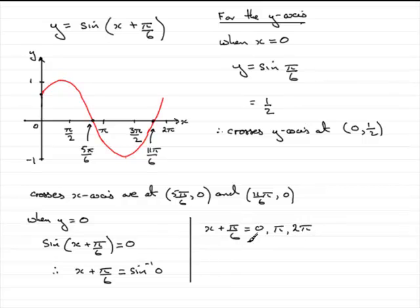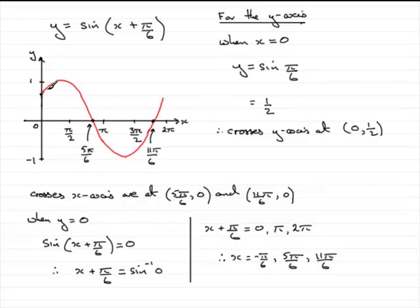We take π/6 away from each of those values to get x. So x = 0 − π/6 = −π/6; x = π − π/6 = 5π/6; and x = 2π − π/6 = 11π/6. The solution x = −π/6 is outside the range — it would be where the curve crosses if extended further back. We're only interested in the two points within range: (5π/6, 0) and (11π/6, 0). So that's the alternative method, and that brings us to the end of this part of the question.